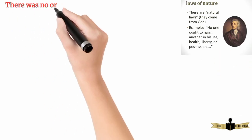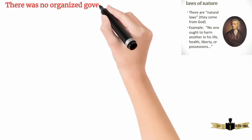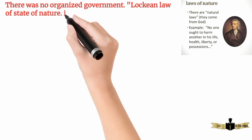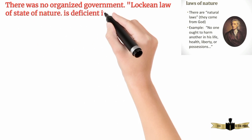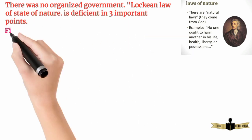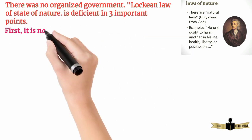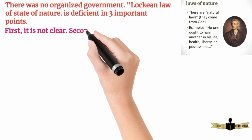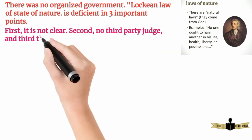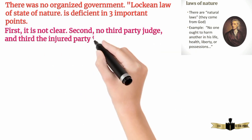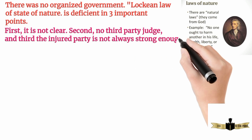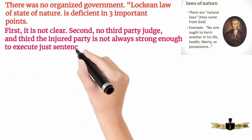There was no organized government. Locke argued that the law of the state of nature is deficient in three important points. First, it is not clear. Second, there is no third-party judge. And third, the injured party is not always strong enough to execute a just sentence.